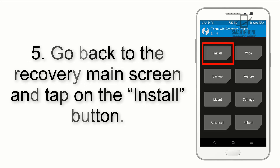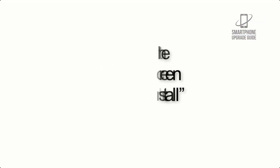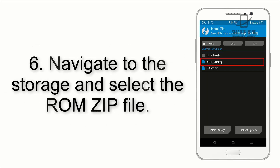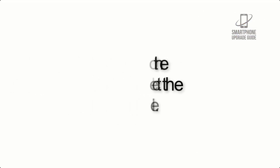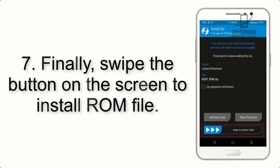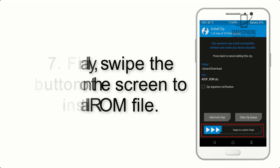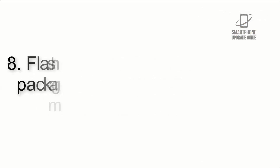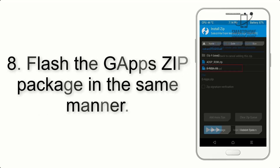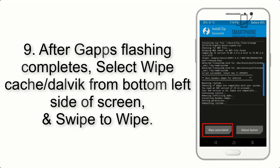Step 4: Swipe the button to wipe the device. Step 5: Go back to the recovery main screen and tap the Install button. Step 6: Navigate to the storage and select the ROM zip file. Step 7: Swipe the button on the screen to install the ROM file. Step 8: Flash the GApps zip package in the same manner.